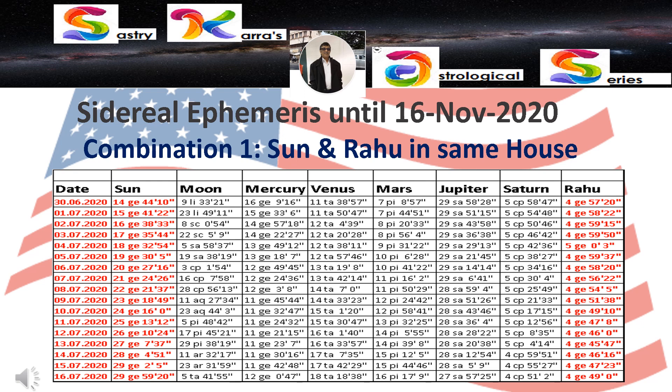For the year 2020, as per the sidereal ephemeris, there are some unique combinations starting 16th June 2020 and ending 16th November 2020. The first combination I am considering is transit Sun co-joining with transit Rahu in Gemini. Transit Sun enters Gemini around 16th or 17th of June and stays there for 30 calendar days. Transit Rahu is already residing in Gemini. I'll be analyzing the role of the country when Sun and Rahu are co-joined in Gemini.